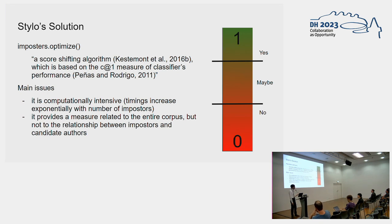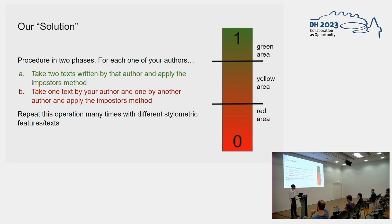It's a very powerful approach, but it has some issues. First of all, it's computationally intensive and becomes very difficult to run with a very large amount of texts. Most importantly, it provides a measure of consistency that has to do with the entirety of the corpus more than the relationship between the imposters and the candidate authors.